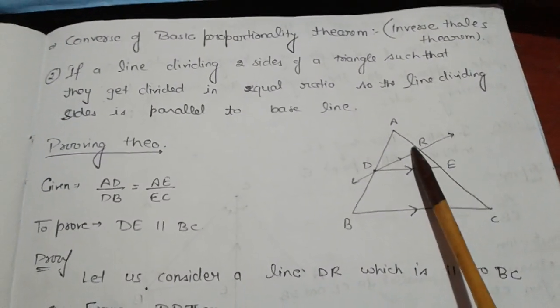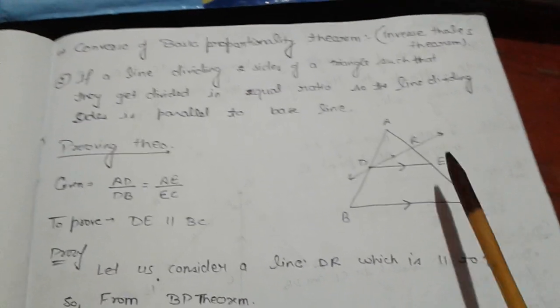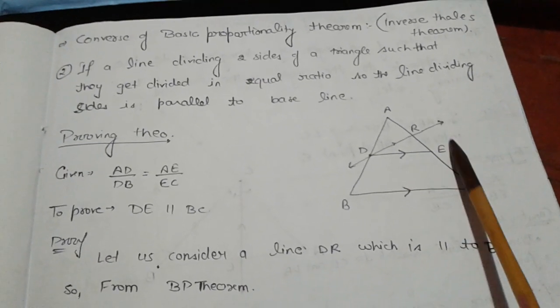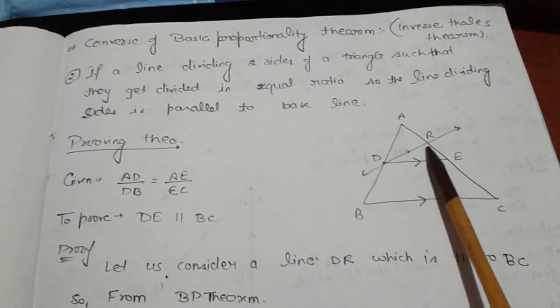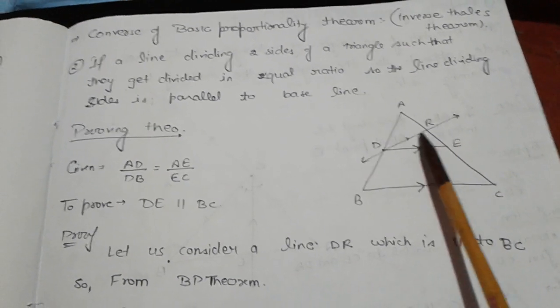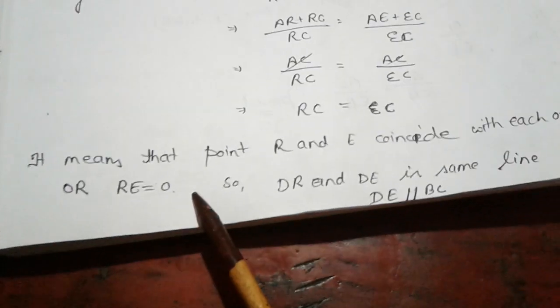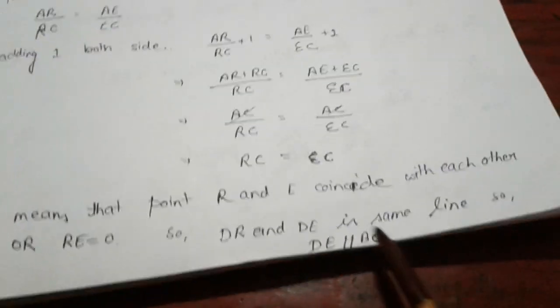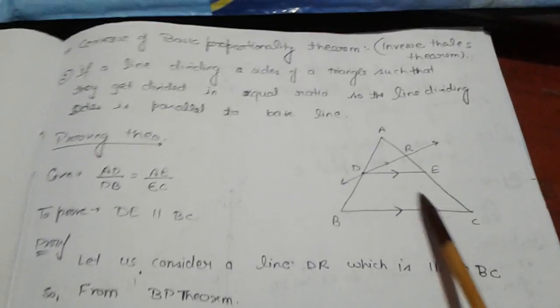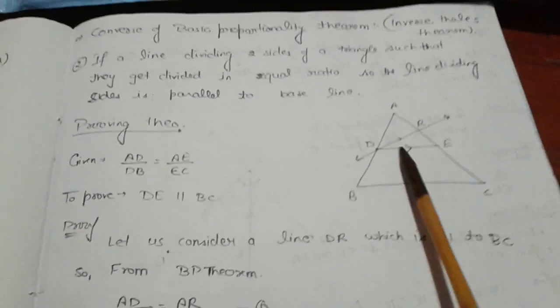Since RC equals EC, it means RE equals zero, which means point R and point E coincide — they are the same point. Therefore, lines DR and DE are the same line. Since we constructed DR parallel to BC, it follows that DE is also parallel to BC. So we have proved the converse of the Basic Proportionality Theorem.